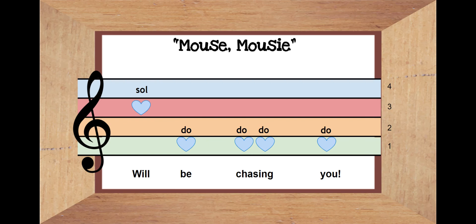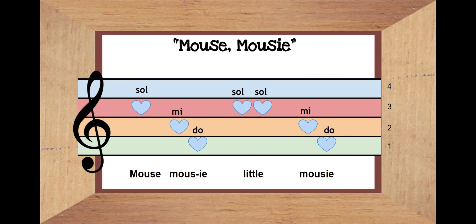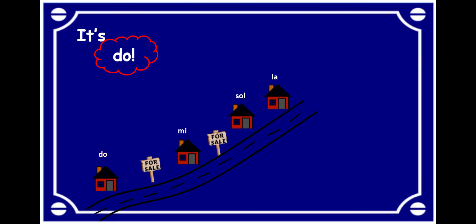Think about the houses that we just used in our song, Mouse Mousy. How many houses from Music Street did we use? I'll go back to the slide to help you. Did we use all four houses? Or maybe just three? Correct. We used three houses. Think about which ones they were while I sing it one last time. Did I use Laura? So, me, and doe.